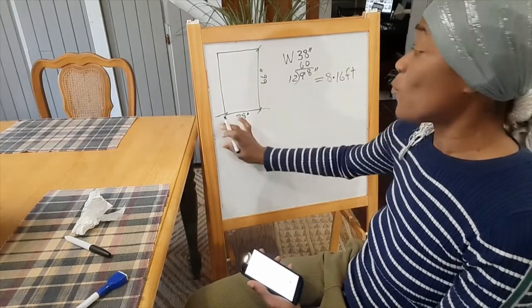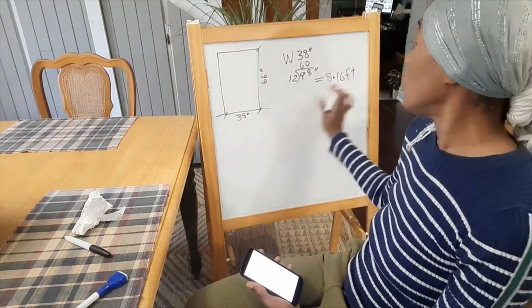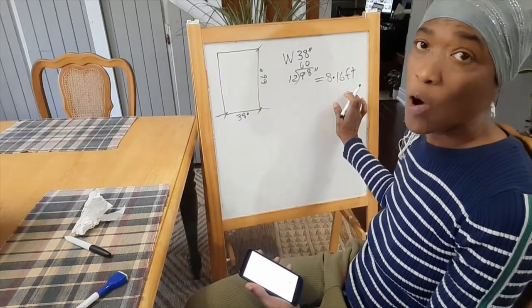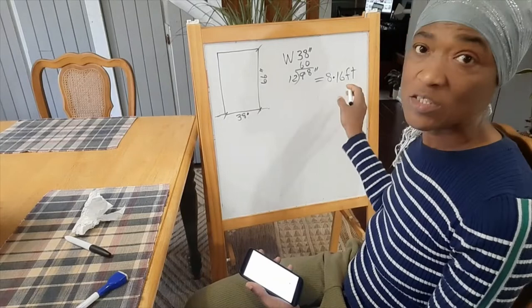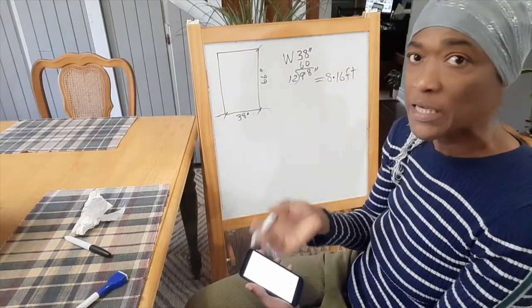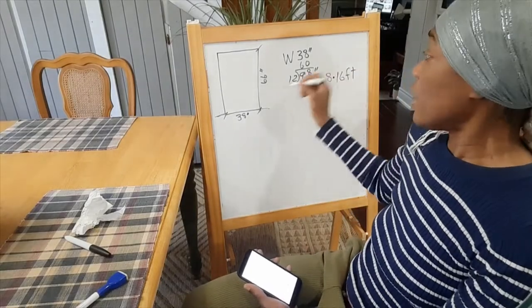So we can say that the width of our rug will need to be 8 feet wide. And that's okay to drop the .16 because we've already used the 30 inches, right?